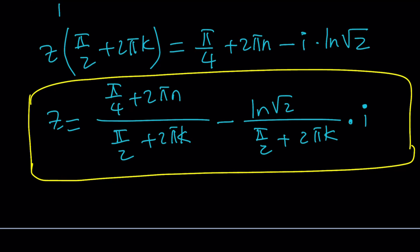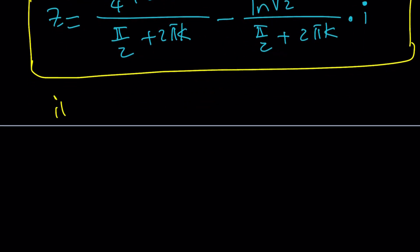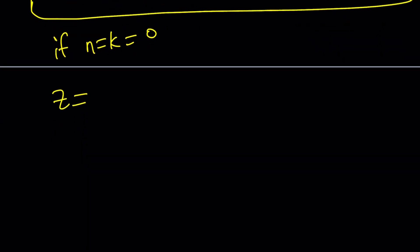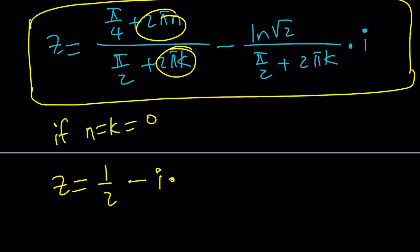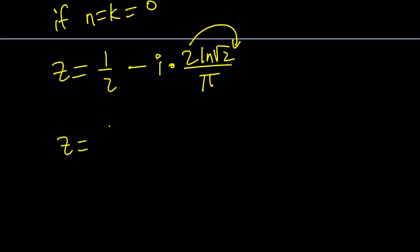And of course, we want to look at some particular solutions. What happens if n and k are both 0? Then we get something much, much simpler. These two are going to disappear. We're going to end up with pi over 4 divided by pi over 2, which is 1 half. And then minus i times. And here, you're going to get ln root 2. And this is going to be 0. Pi over 2 will be flipped. And you're going to get something like 2 ln root 2 divided by pi. And of course, we could simplify this a little bit. Put the 2 here as a power. Square root of 2 squared is 2. So, from here, z is going to be in the simplest form, 1 half minus i times ln 2 over pi. So, this would be one of the solutions, obviously. Probably the simplest looking one.